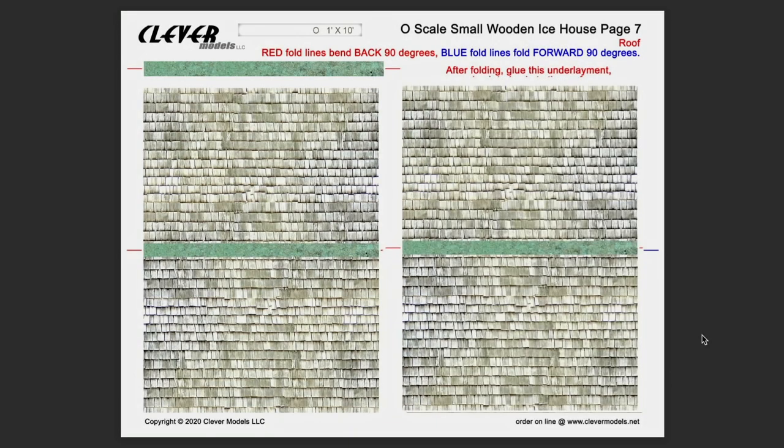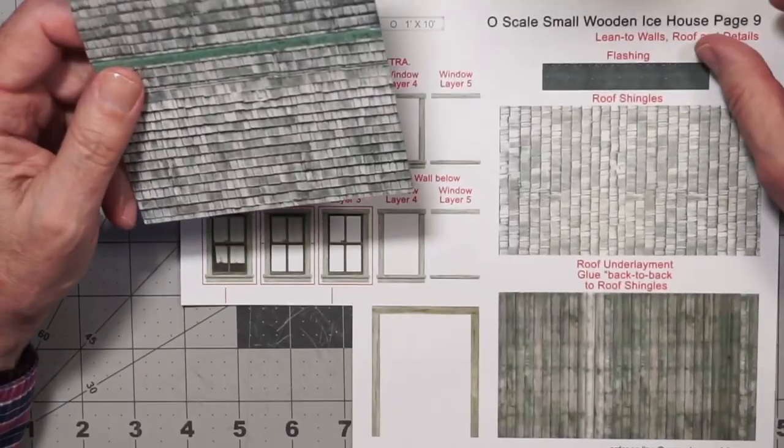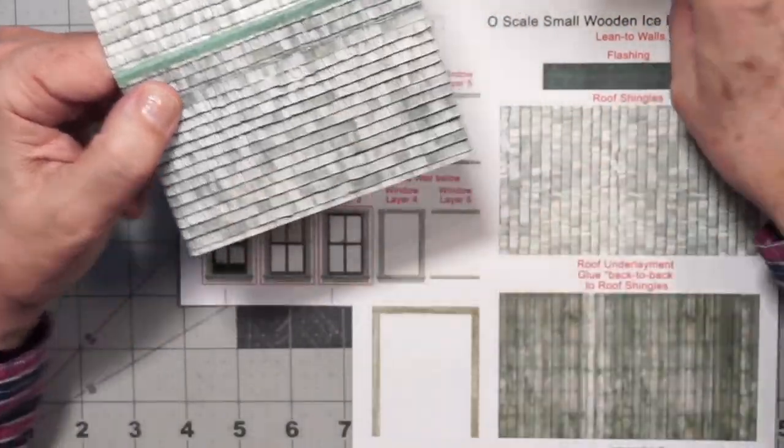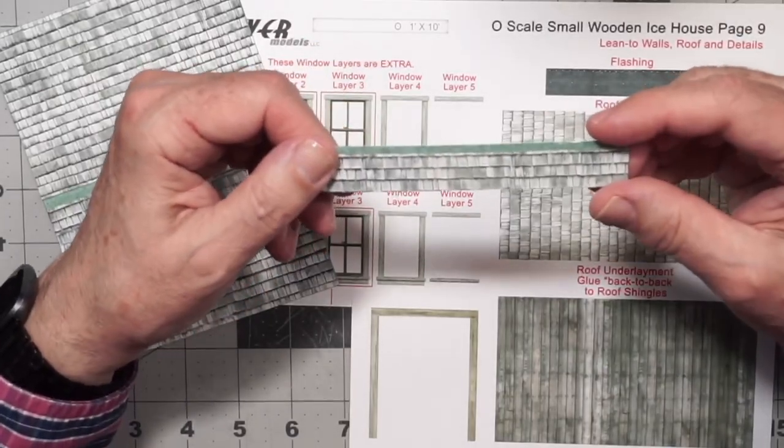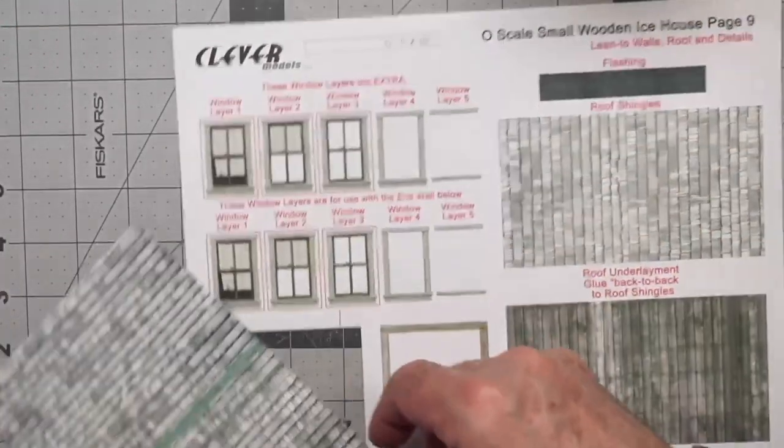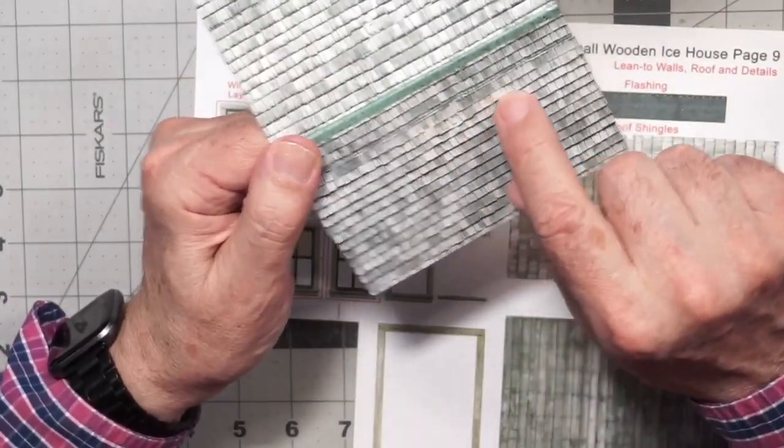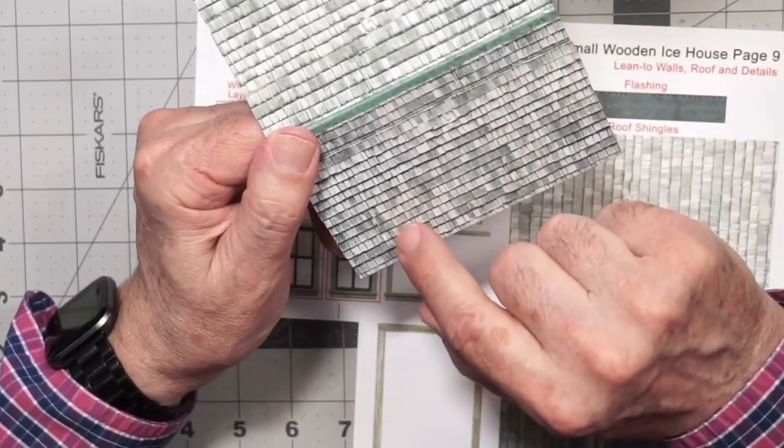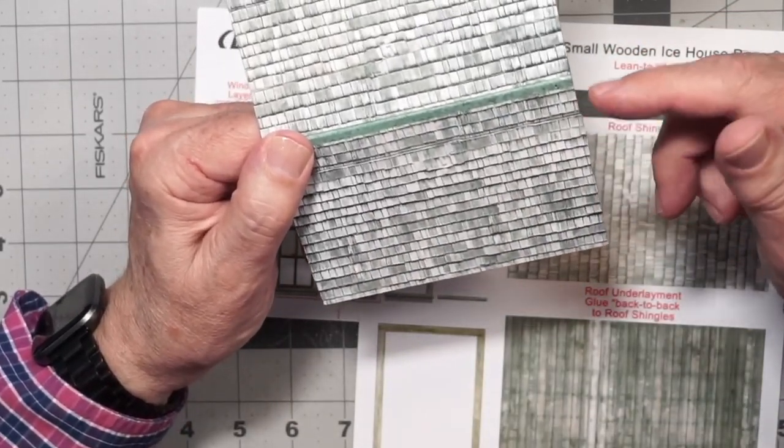Also included with the kit is an additional page of cedar shingles. What we'll be doing is working with rows of shingles and then cutting them in widths of two rows and then adding details as we overlap the shingles. Let's get started. I think you'll find this is a simple process that adds additional relief and details to your structure.